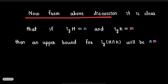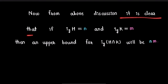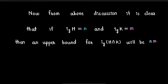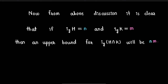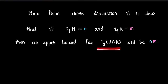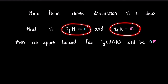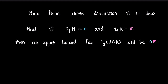Now from the above discussion, it is clear that if the index of H in G is finite say N, and the index of K in G is finite say M, then the upper bound for the index of H intersection K in G is the product of the index of H and the index of K, that is N·M. This proves our result.